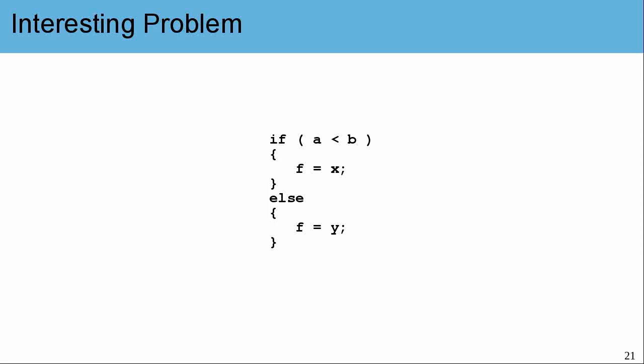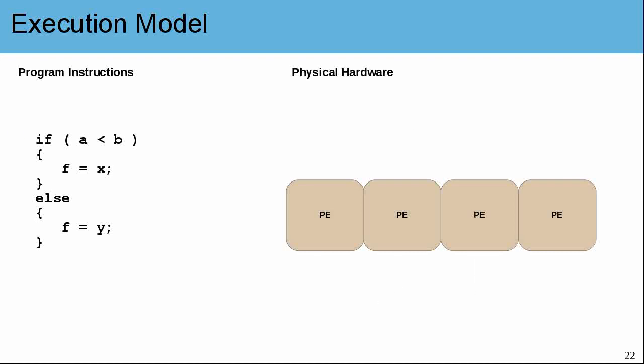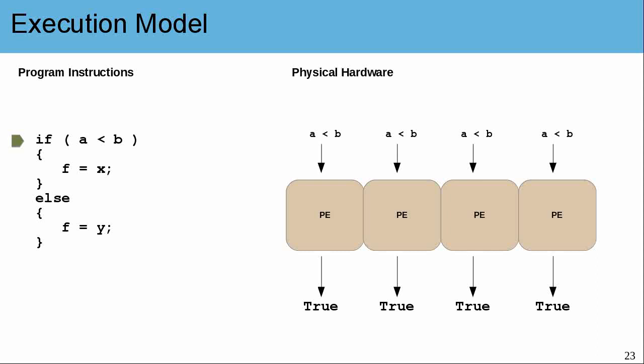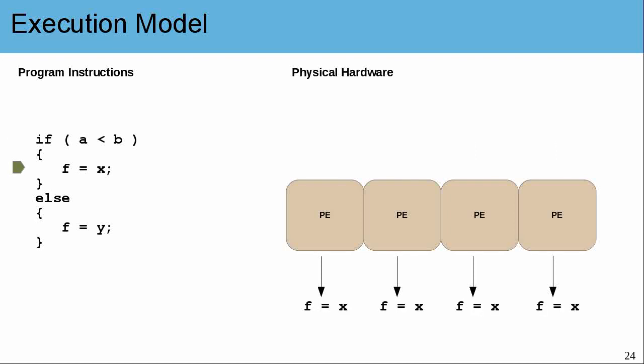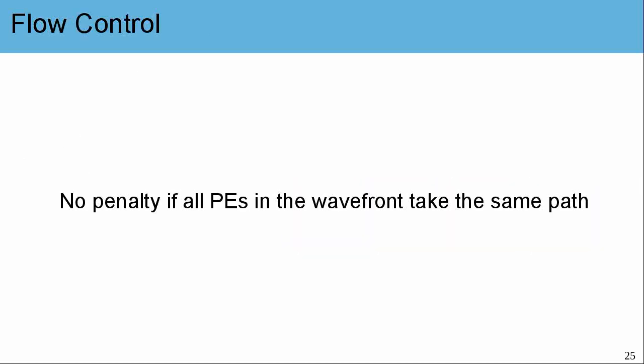Here's an interesting problem: the instruction pointer is locked together, but sometimes we want to execute conditional statements. We have a conditional where we assign two different values depending on whether A is less than B. These A and B values are private — each work item has its own copy. Let's trace through: everyone evaluates the conditional independently. In this case, every single work item within the wavefront has agreed that A is less than B, so each goes ahead and executes the instruction. There is no penalty if all processing elements within the wavefront take the same path.